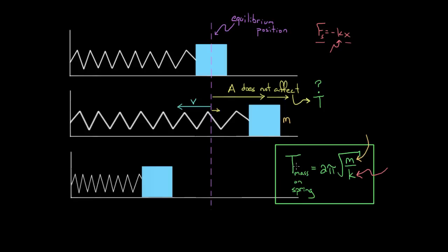So the period of a mass on a spring depends only on the mass and the spring constant — there's no amplitude in the formula. Change the amplitude and it doesn't matter; those effects offset. The period only depends on m and k. If you want to see the derivation, watch the calculus-based videos.